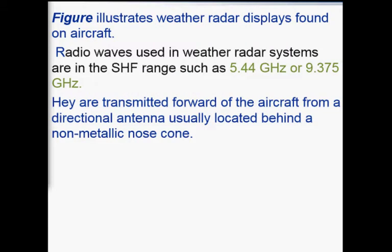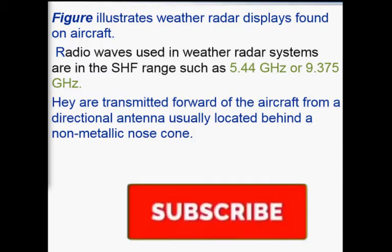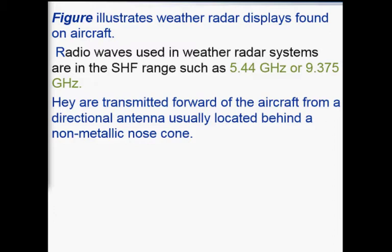The figure shown displays what kind of information the pilot would have on the display. Radio waves used in weather radar systems are in the SHF (super high frequency) range, with frequencies between 5.44 GHz and 9.375 GHz. The weather radar has a transmitter, a receiver, and a processor, all working with one antenna located in the front nose cone — transmitted forward of the aircraft from a directional antenna usually located behind a non-metallic nose cone.